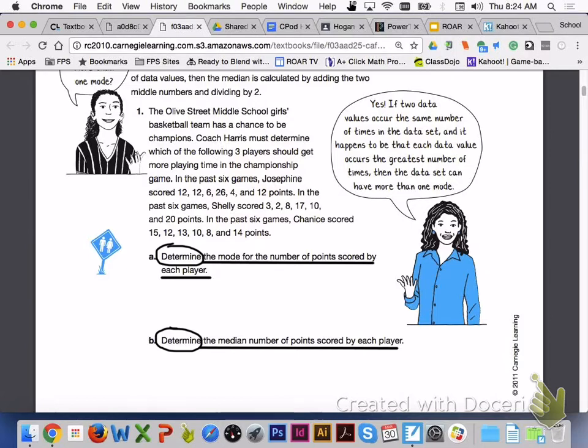In the past six games, Shelly scored 3, 2, 8, 17, 10, and 20 points. In the past six games, Shanice scored 15, 12, 13, 10, 8, and 14 points.